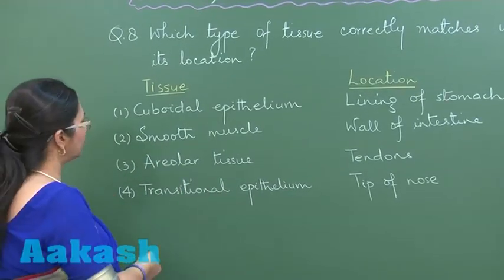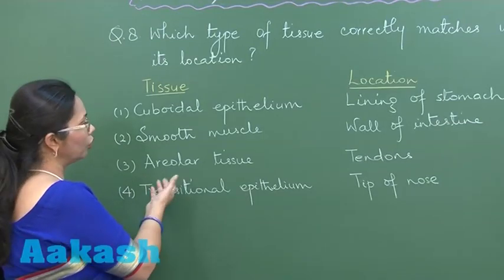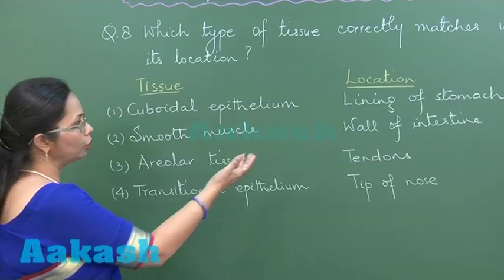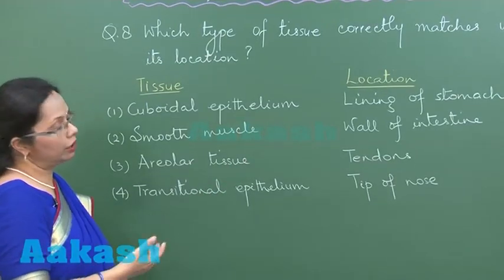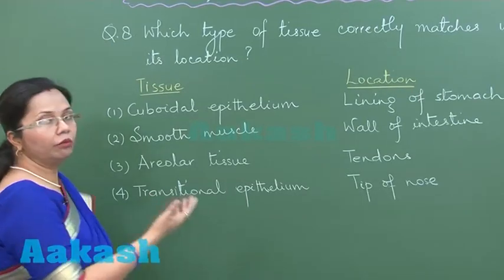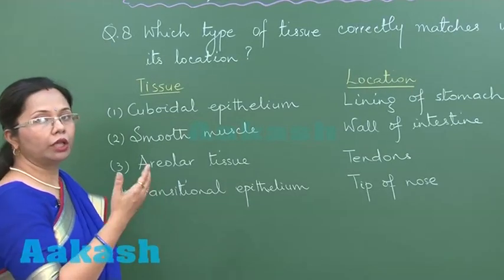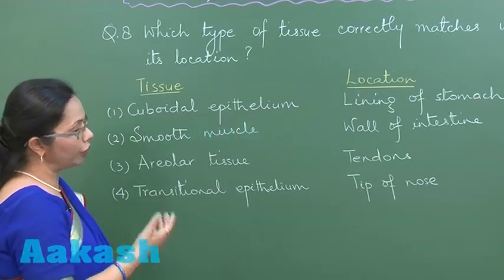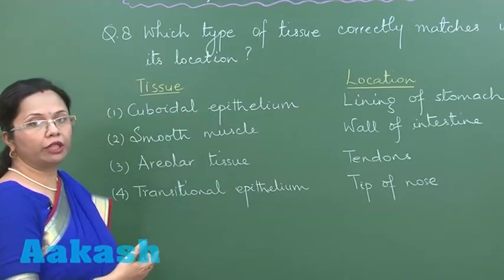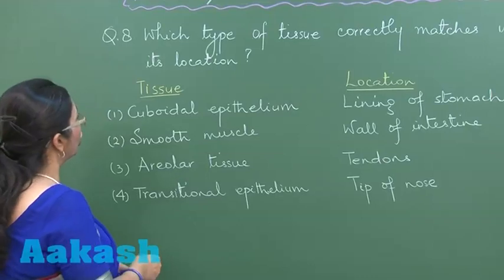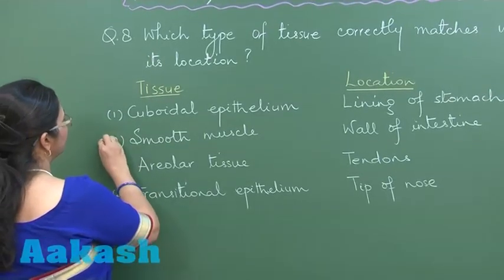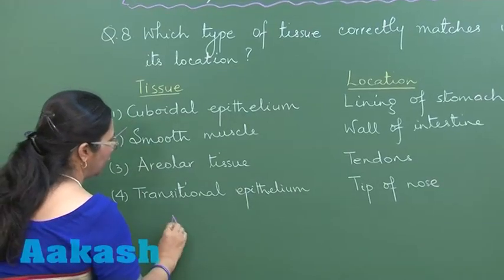The remaining two options are also incorrect. Areolar tissue is loose connective tissue while tendons are dense connective tissue. Transitional epithelium is found in the lining of ureters and urinary bladder, not the tip of the nose, which is made up of elastic cartilage. So our answer is smooth muscle present in the wall of intestine.